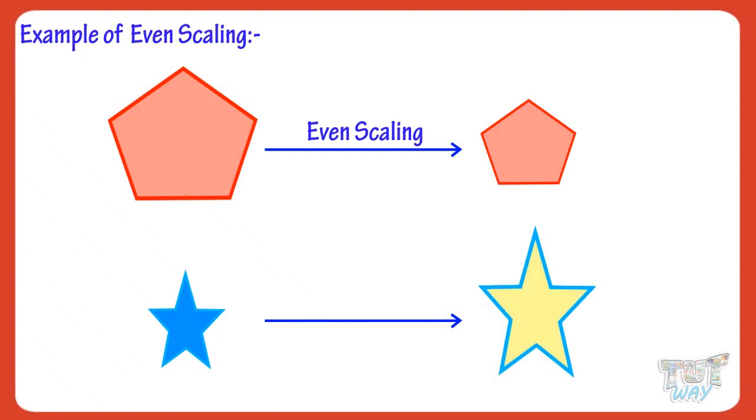Here, the star is made bigger, but the shape is not changed, that is, each dimension is changed equally. This is an example of even scaling.